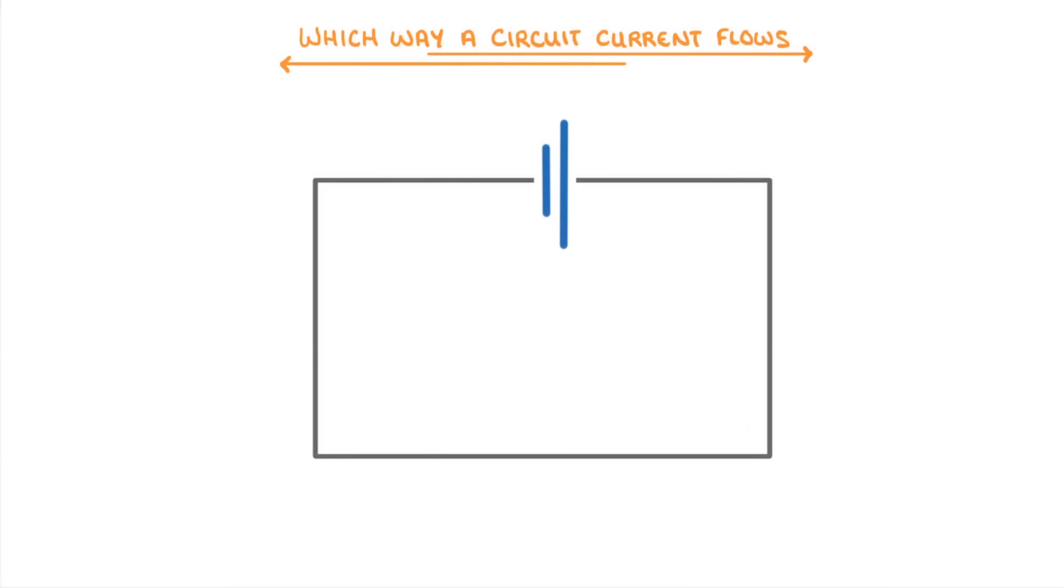The last thing we need to cover is which way around a circuit current flows. If you look at the cell on this circuit diagram, you can see that it has one longer line and one shorter line. The longer line in a cell or battery is always the positive terminal, whereas the shorter line is always the negative terminal.